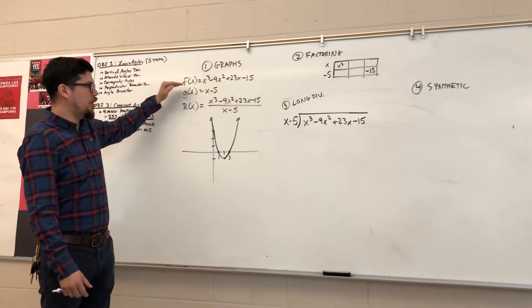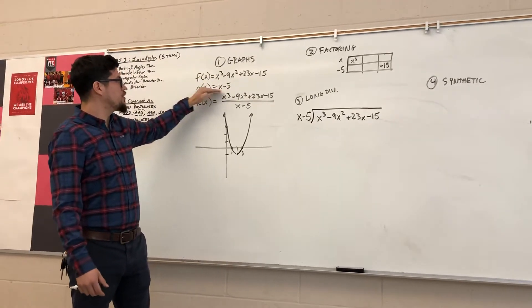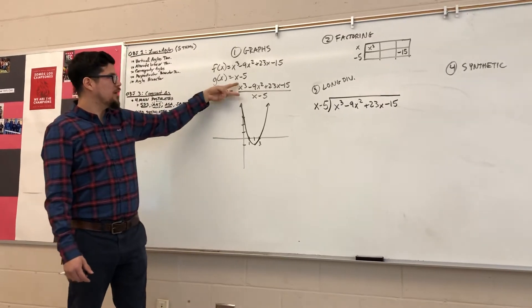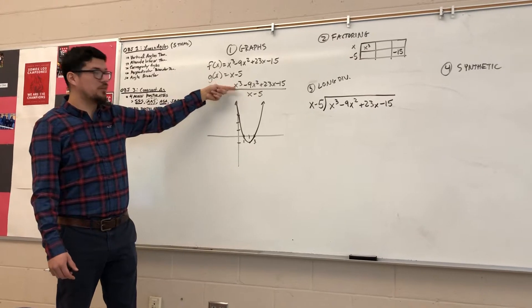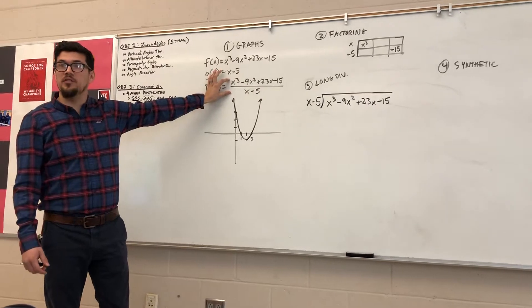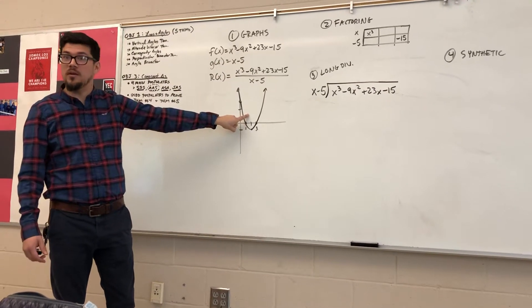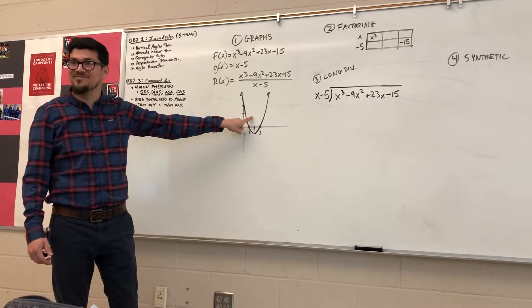We're going to start by thinking of the cubic function as f(x), the linear function as g(x), and this rational function r(x) as basically the cubic divided by the linear. When I put this function into my graphing calculator, into Desmos, I see that I get this function. This function looks like what? Quadratic.